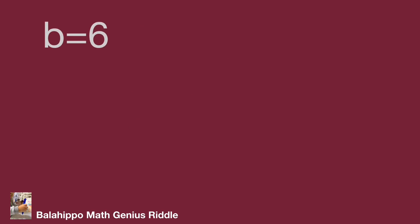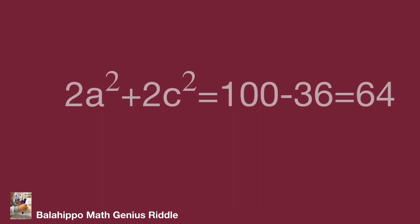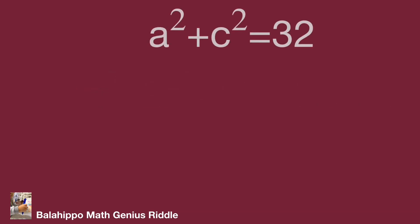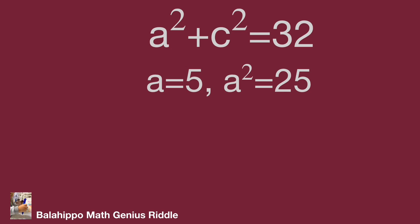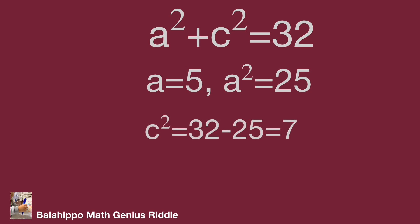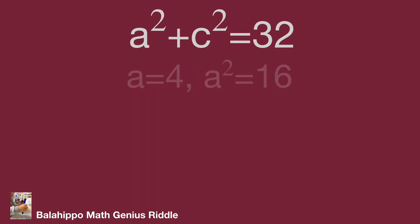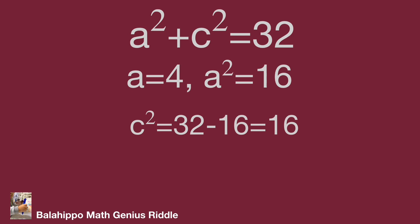With b equal to 6: substituting gives 2a squared plus 2c squared equal to 64, so a squared plus c squared equals 32. Trying a equal to 4 gives a squared equal to 16, so c squared equals 32 minus 16 equals 16, meaning c equals 4. That's great! We have found the first positive integer group for a, b, c: (4, 6, 4).